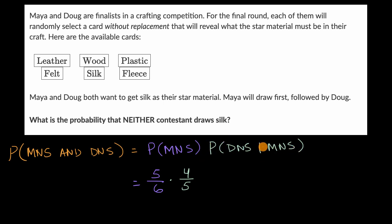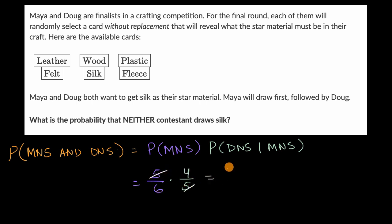If these were independent events — if Maya picked and then put her card back in and then Doug were to pick separately — then the probability that Doug gets no silk, given that Maya got no silk, would be the same thing as the probability that Doug gets no silk regardless of what Maya was doing. So this ends up becoming four over five, and the overall probability is five over six times four over five, which is the same thing as two thirds.